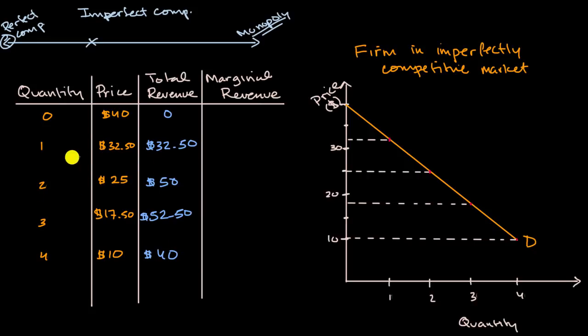Well, our marginal revenue for that first unit is the same as what the price of that first unit is. We went from zero to $32.50 with that first unit. So that's $32.50 right over here.